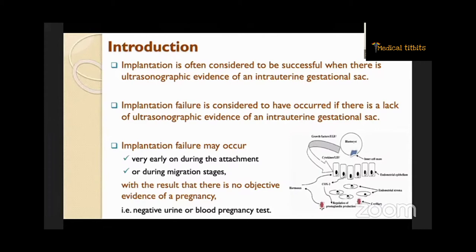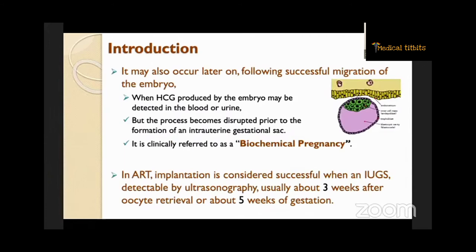Implantation failure may also occur later on following successful migration of the embryo, when HCG produced by the embryo may be detected in the blood or urine, but the process becomes disrupted prior to the formation of an intra-uterine gestational sac. This is clinically referred to as biochemical pregnancy. In IVF, implantation is considered successful when an intra-uterine gestational sac is detectable by ultrasonography, usually about three weeks after oocyte retrieval or about five weeks of gestation.